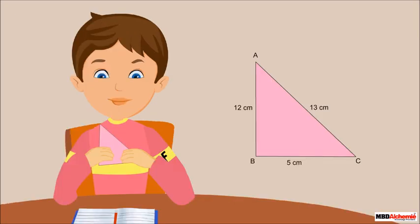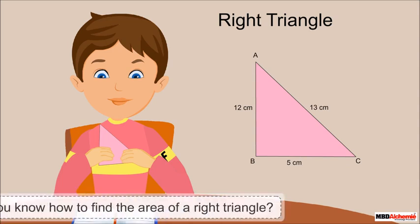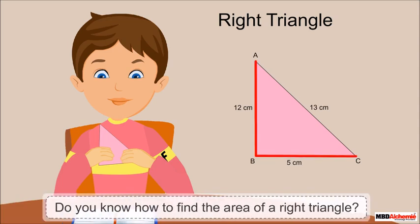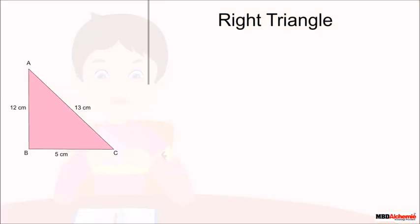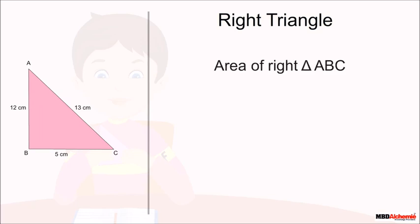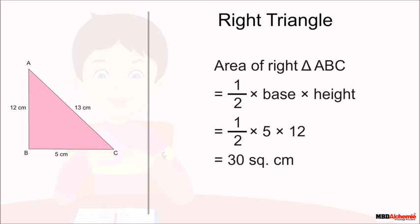Sid identifies his triangle and says it is a right triangle. He finds its area using the formula: the area of a right triangle is half the product of its base and height.